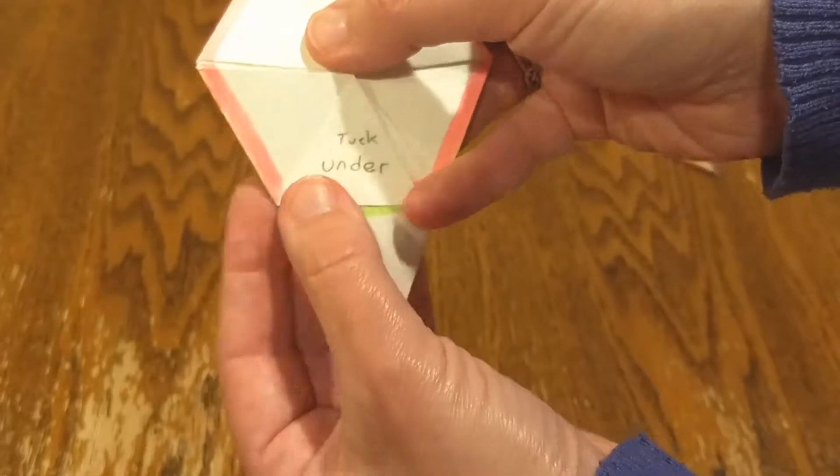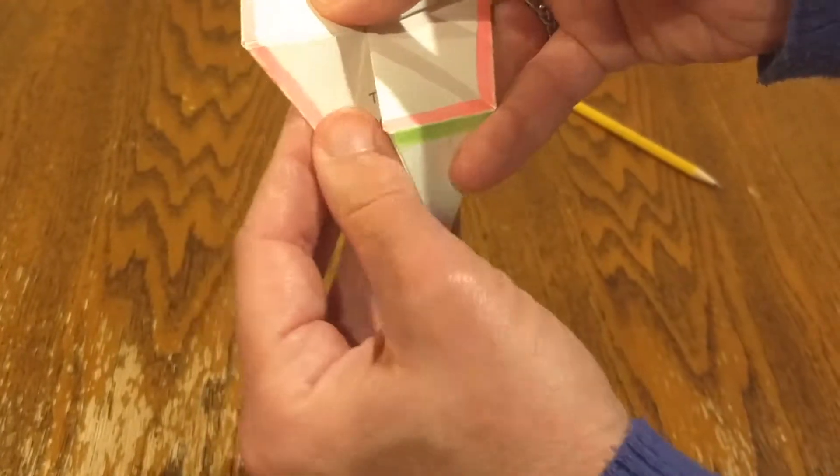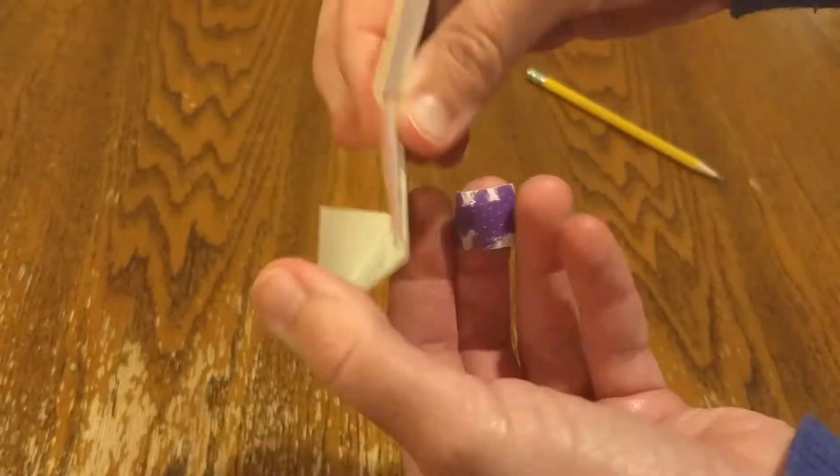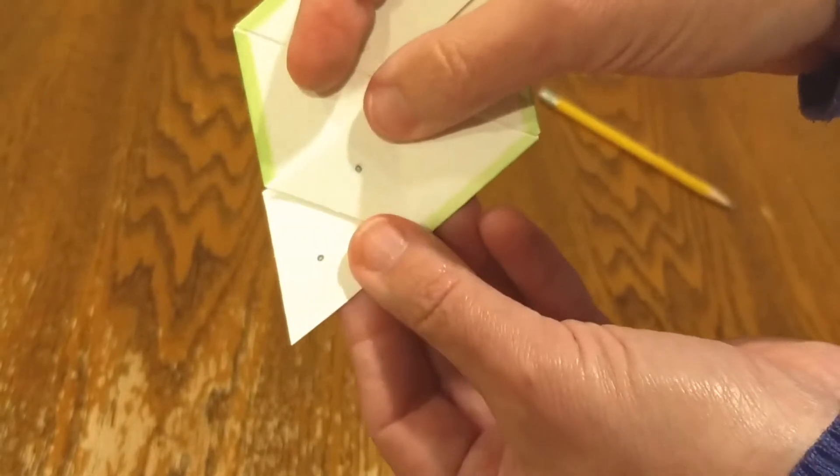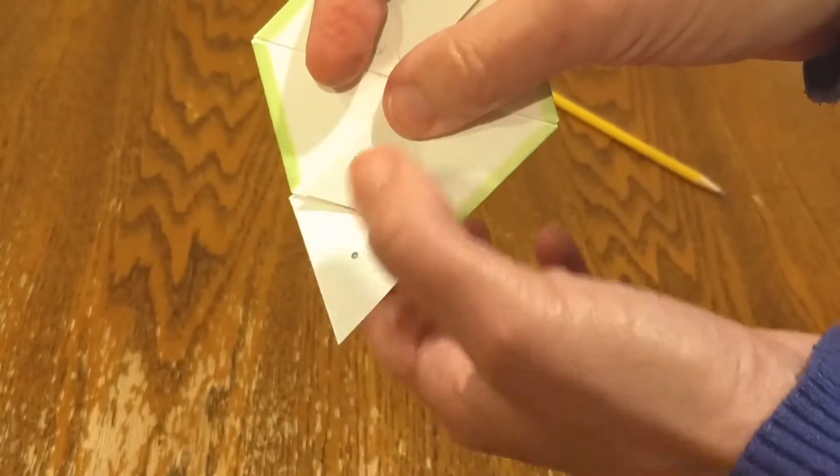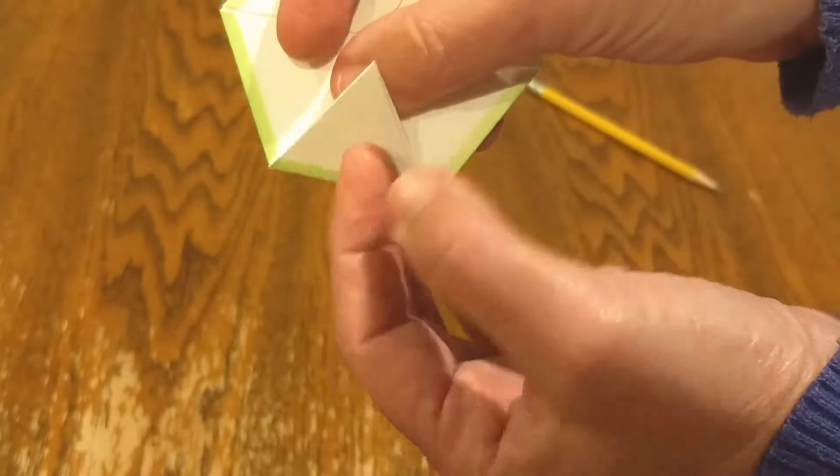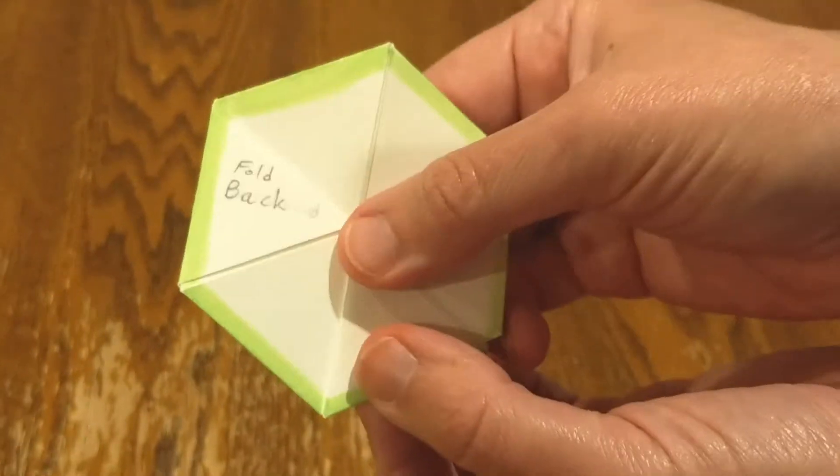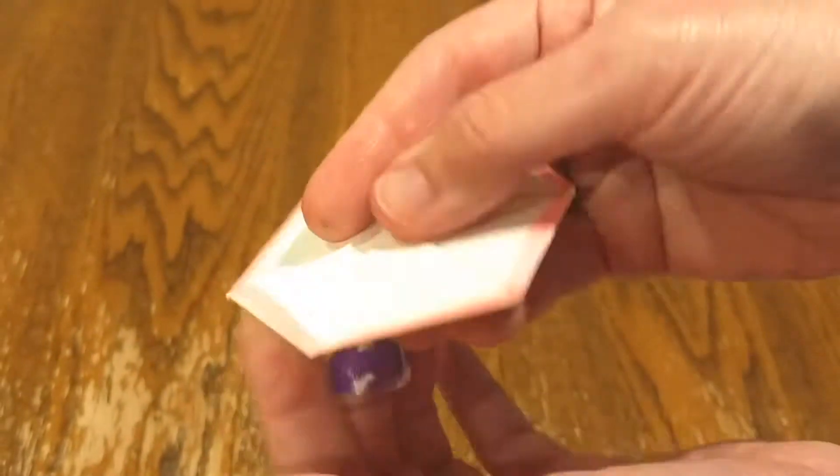This one says tuck under, so we tuck it under. And then when we flip it around, these two dots match. That's where you put glue right there, and glue right there, and you glue it together. Then you have your hexahexaflexagon.